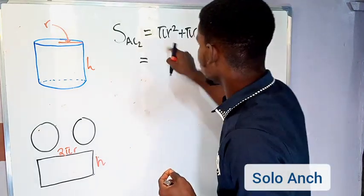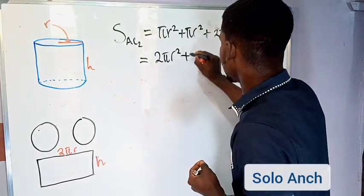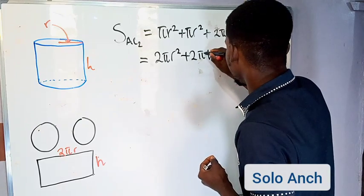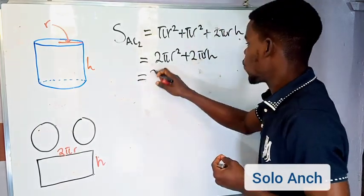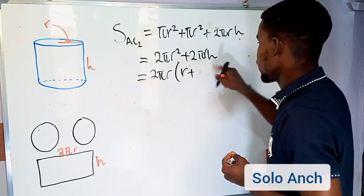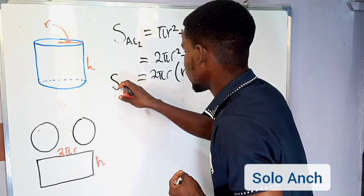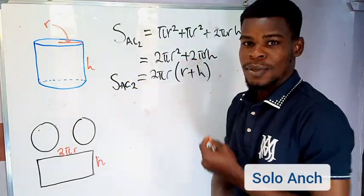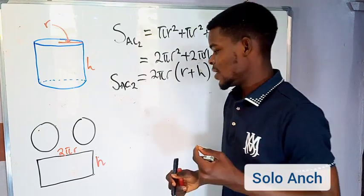Adding everything together: the two circles give 2πr², plus the rectangle gives 2πrh. You can factor out the common factor 2πr to get 2πr(r + h). This is the formula for the surface area of a cylinder when both ends are closed.